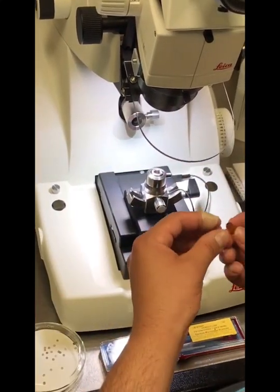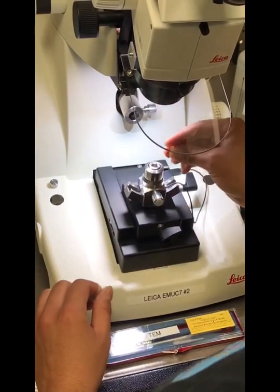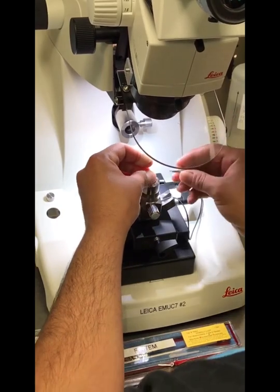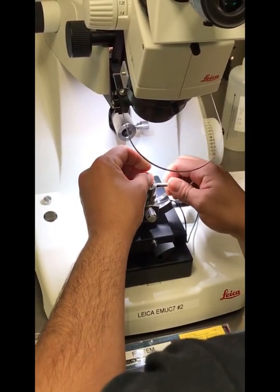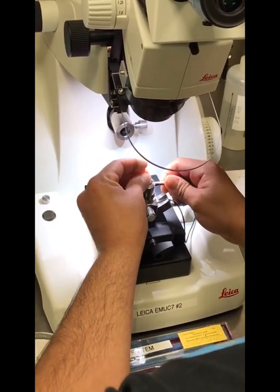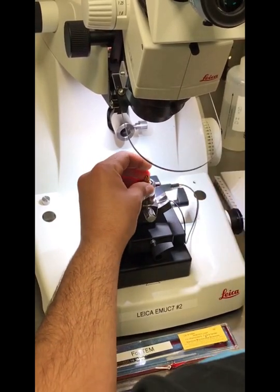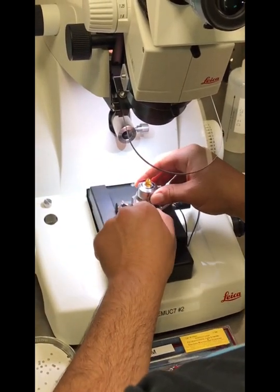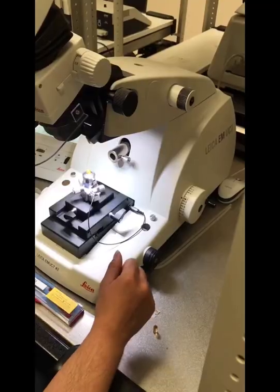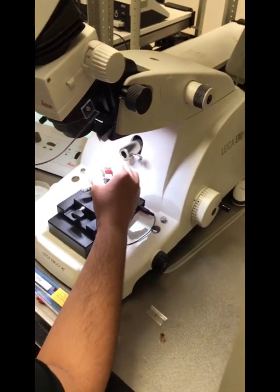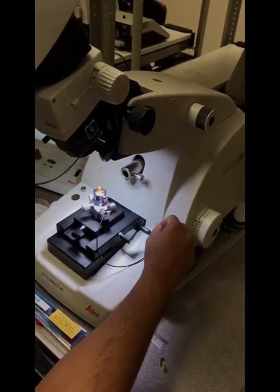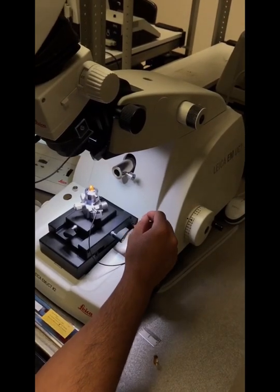Put my untrimmed block in the holder, and tighten with the special Allen screw. Make sure it's tight and secure. Okay, so once the block is inside of this holder here securely, we can start facing.